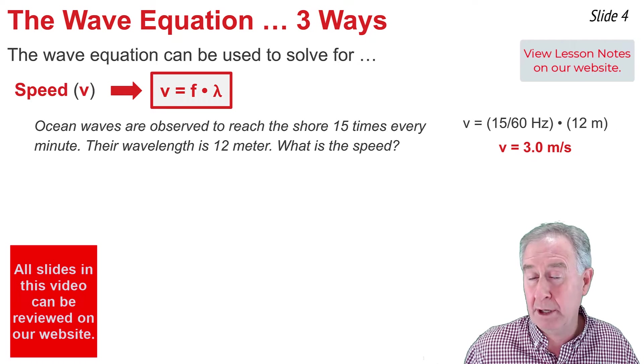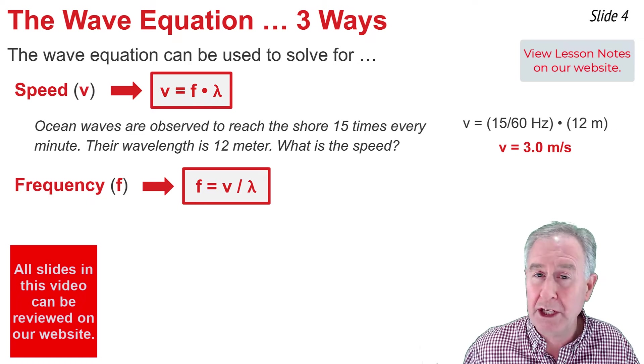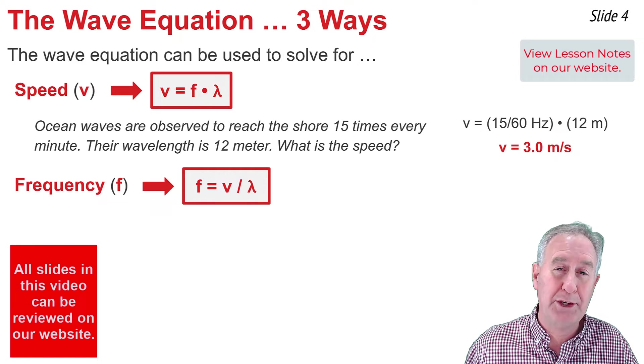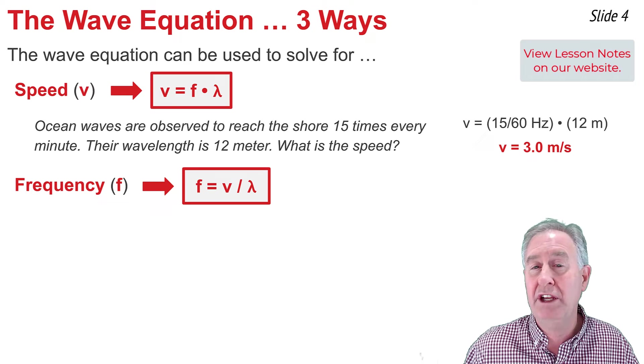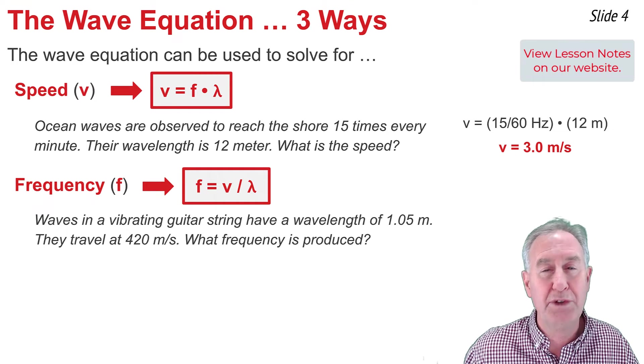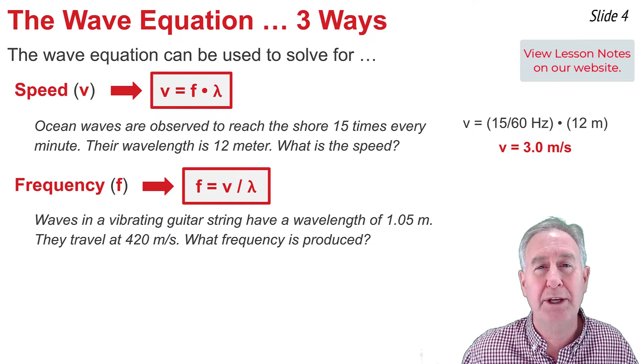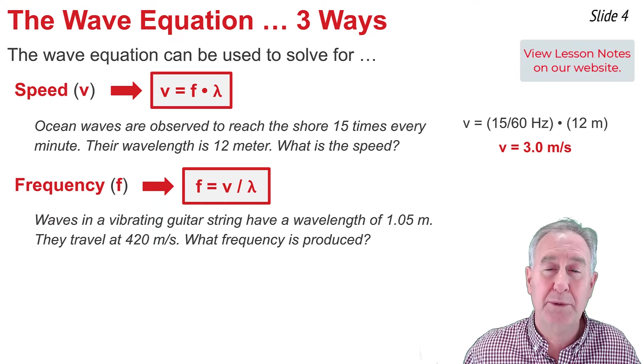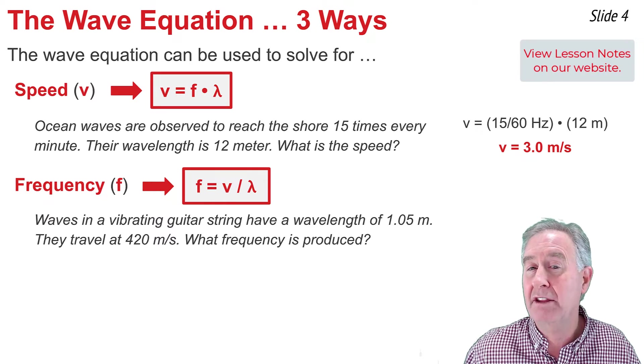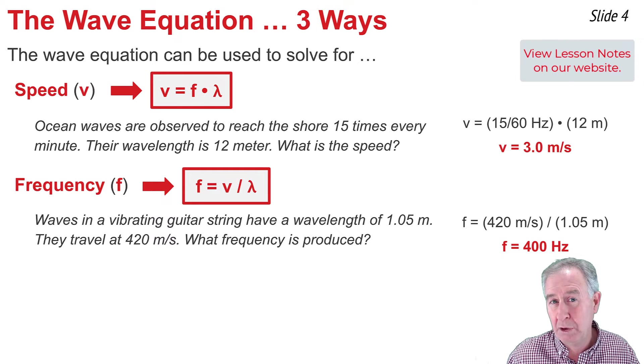But V equal F lambda can also be used to solve for frequency. It would have to be rearranged by dividing each side of the equation by the wavelength. The equation becomes F equal V divided by wavelength, perfect for solving problems, such as waves in a vibrating guitar string have a wavelength of 1.05 meters that they travel at 420 meters per second. What is their frequency? To do so, I have to take the V of 420 meters per second and divide by the lambda of 1.05 meters, and I get 400 hertz.